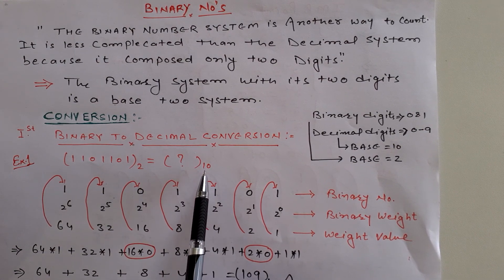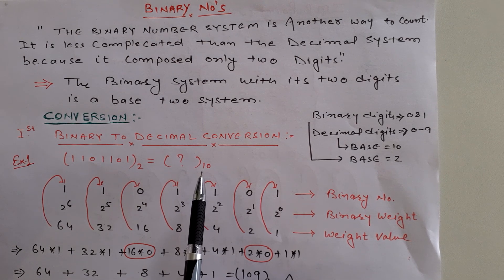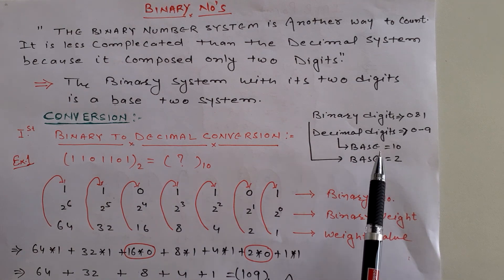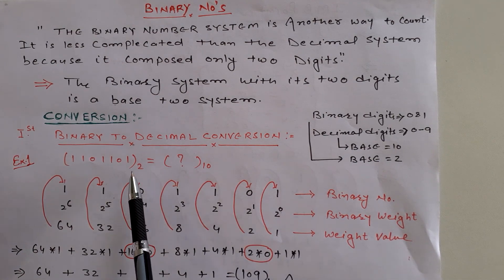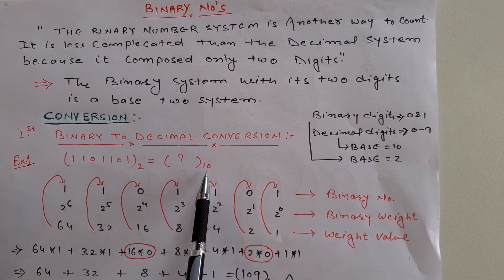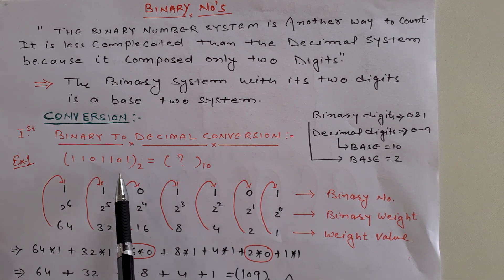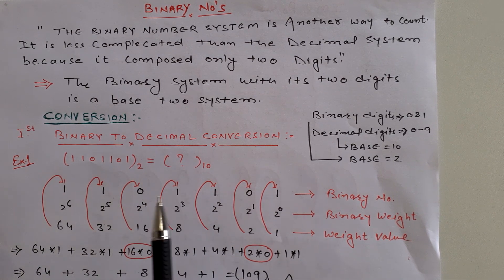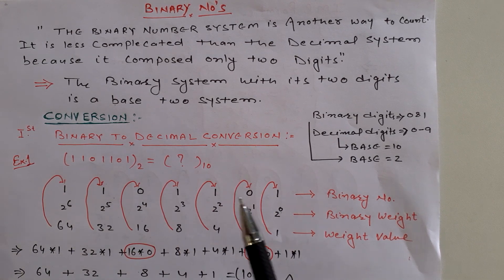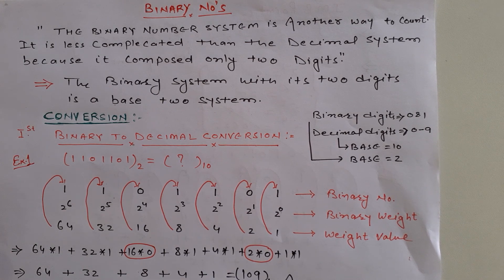Convert it to base ten, which is decimal. You should know that base ten belongs to the decimal system. So it is understood that you have to convert binary to decimal. To identify, either it will be given in the question, or you have to identify through its base.